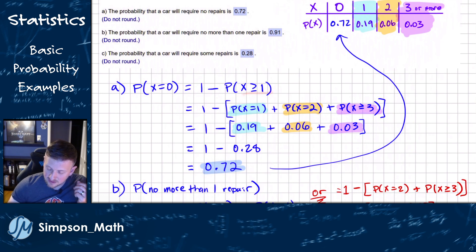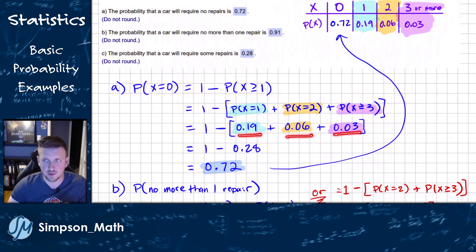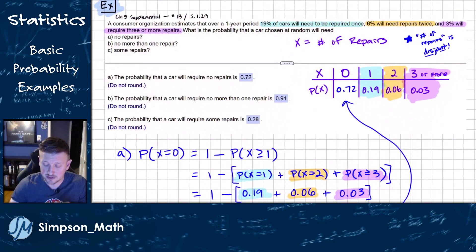So the probability that x is greater than or equal to one, meaning there's one or more repairs, if I subtract that from one, I'll get the none. Well, one or more, based on the given information, that would be one repair, two repairs, or three or more. So the one is 19% or 0.19, exactly two is 6% or 0.06, and three or more is 0.03 or 3%. Be mindful of that 0.03. Notice they give us 6%, that is not 0.6, that would be 60%.